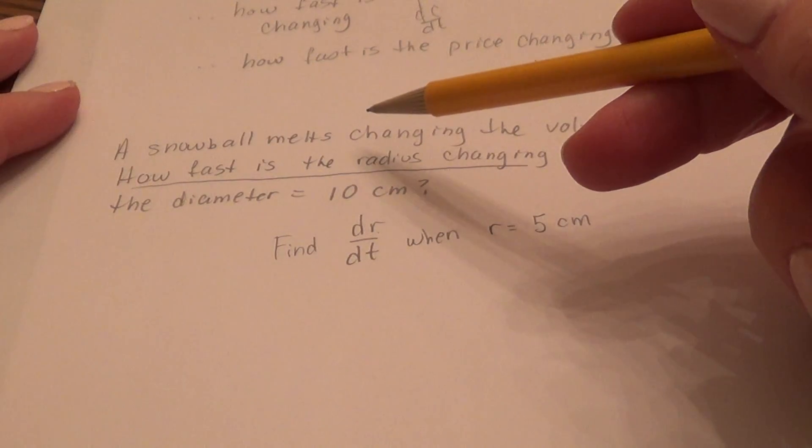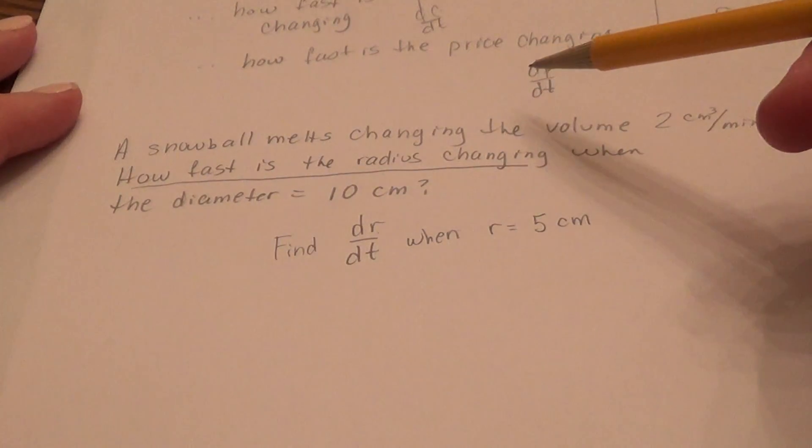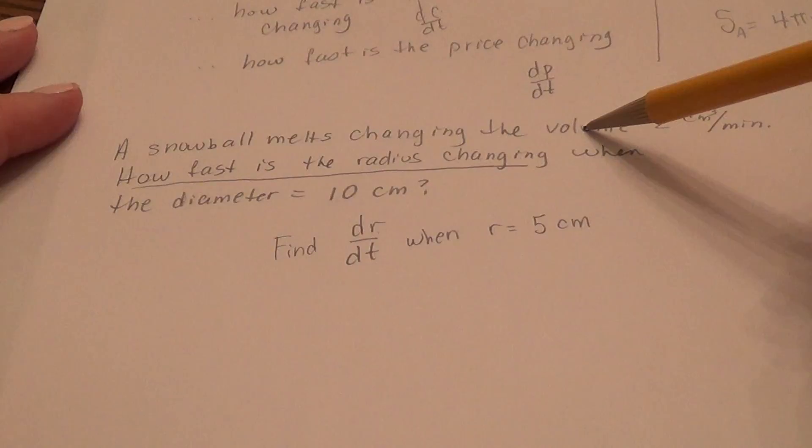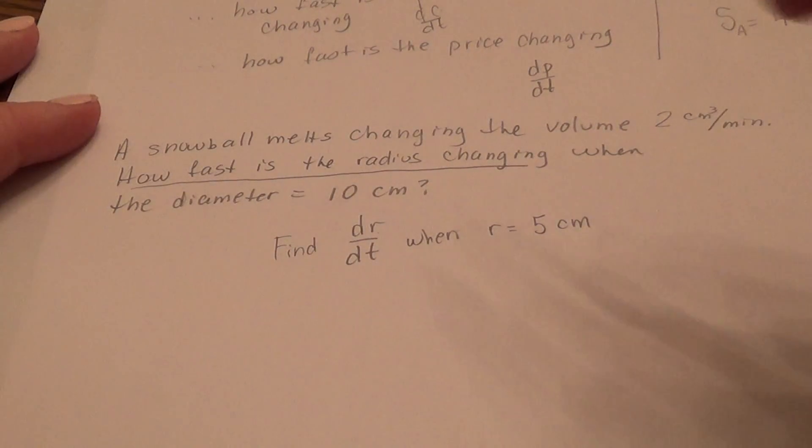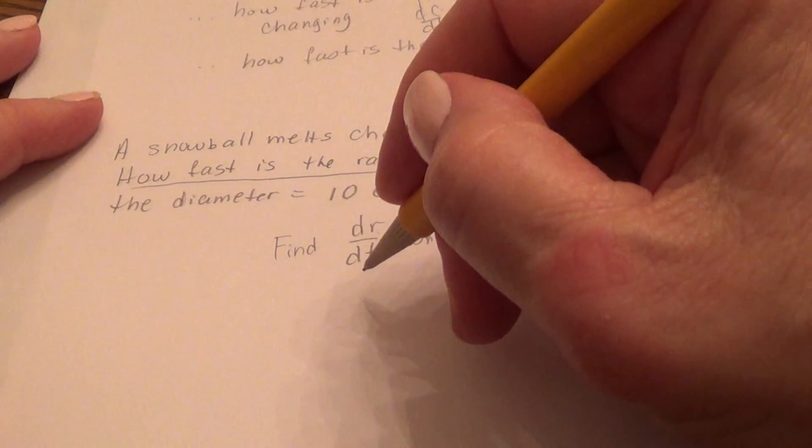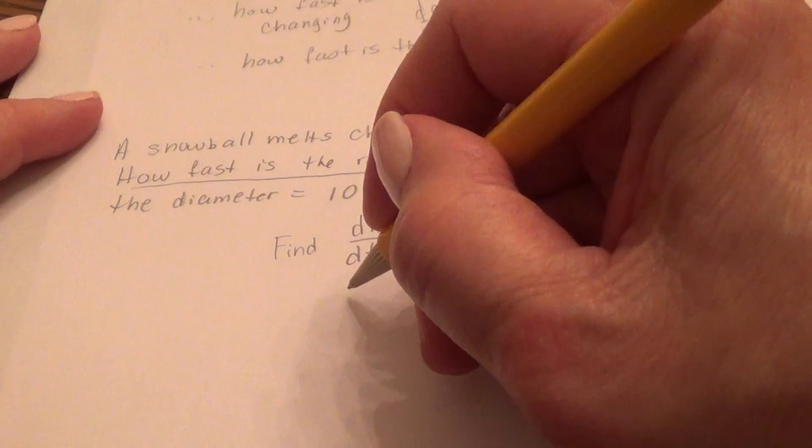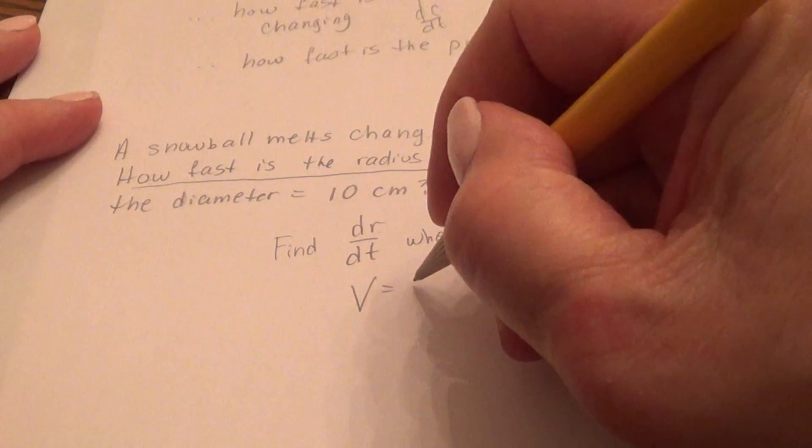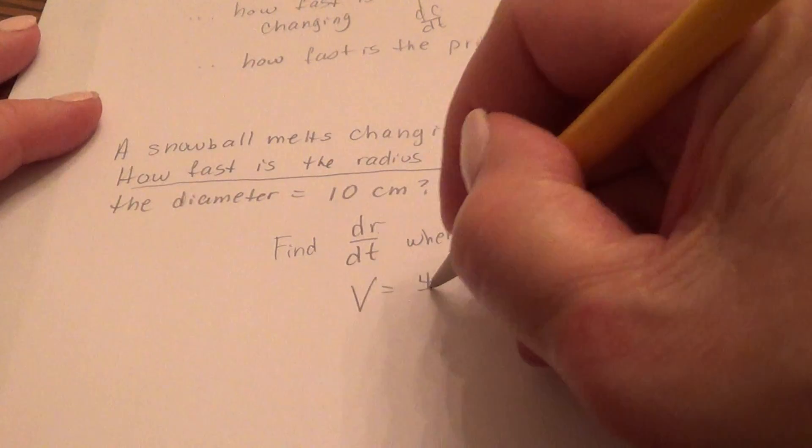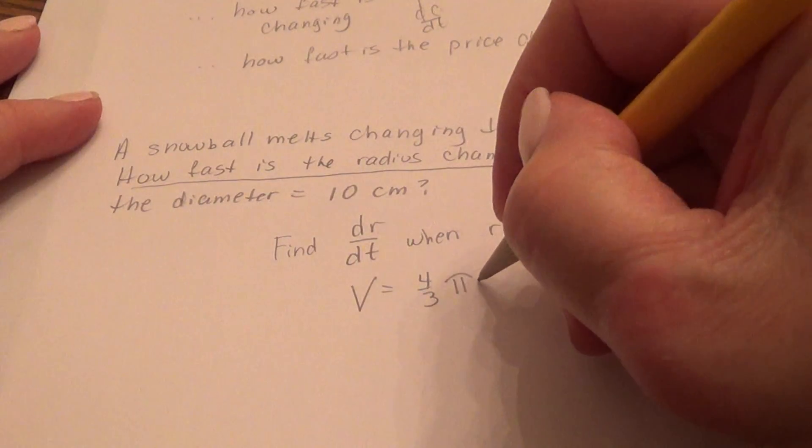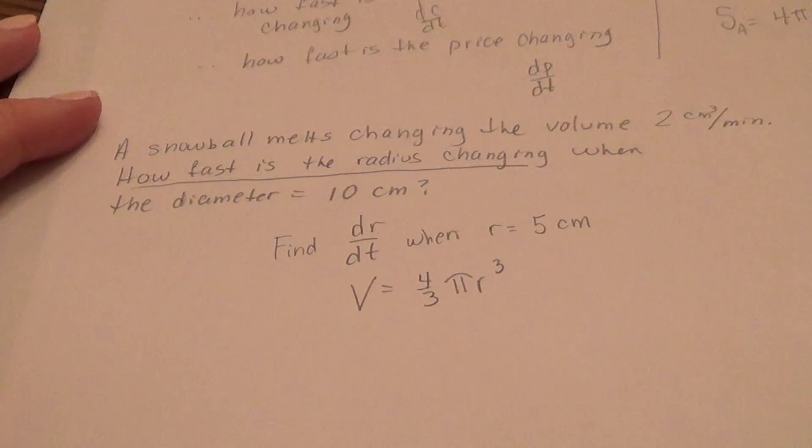So what is the equation that will relate all these variables? Well, since it's a sphere and it's melting, the volume is changing. So we're going to pull the volume equation out. A volume of a sphere is 4/3 pi r cubed.